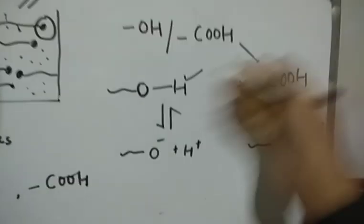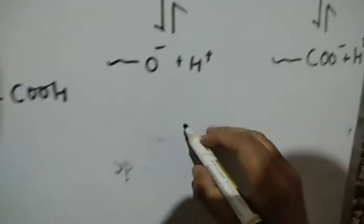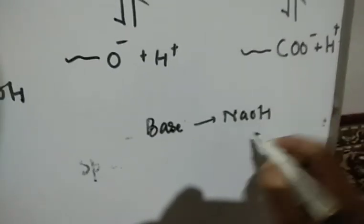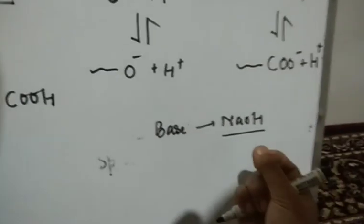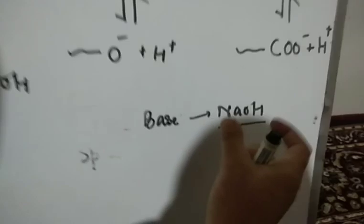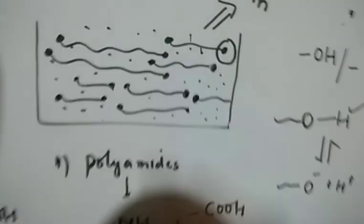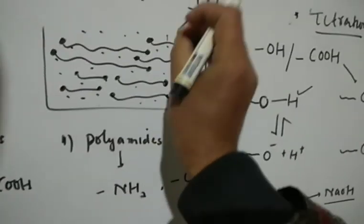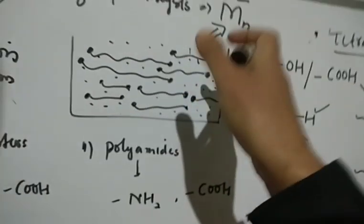Since the polymer behaves like an acid, we can titrate it with a base — for example, sodium hydroxide (NaOH). We place NaOH of known molarity (say 0.1 M) in a burette. The volume of NaOH used allows us to indirectly calculate the concentration of OH or carboxylic acid end groups present in the polymer sample. This is our example of a titration chemical method.